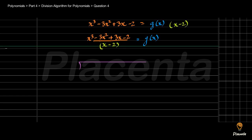Our dividend is x cube minus 3x square plus 3x minus 2, and the divisor is x minus 2. Following the standard process, we pick the highest power term of the dividend, which is x cube, and divide it by the highest power term of the divisor, that is x. This gives x square, which becomes the first part of our quotient.